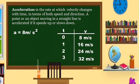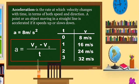So at 0 seconds we have 8 meters per second. In 1 second, we have 16 meters per second because you add 8. In 2 seconds, we have 24 because 16 plus 8 is 24. And at 3 seconds it is 32 meters per second. So the formula for getting the acceleration is equal to the final velocity minus the initial velocity over the time.